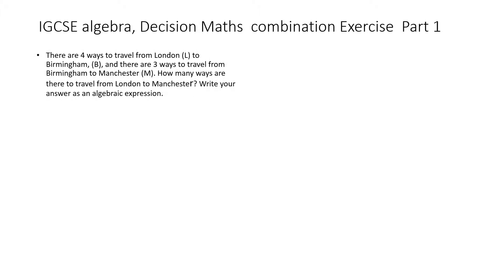The problem states: there are four ways to travel from London to Birmingham, and there are three ways to travel from Birmingham to Manchester. How many ways are there to travel from London to Manchester? Write your answer as an algebraic expression.